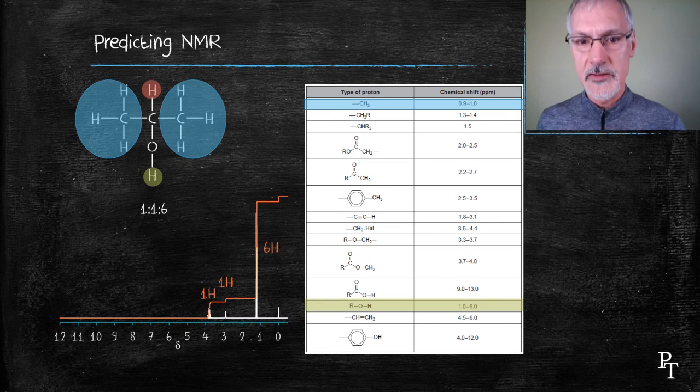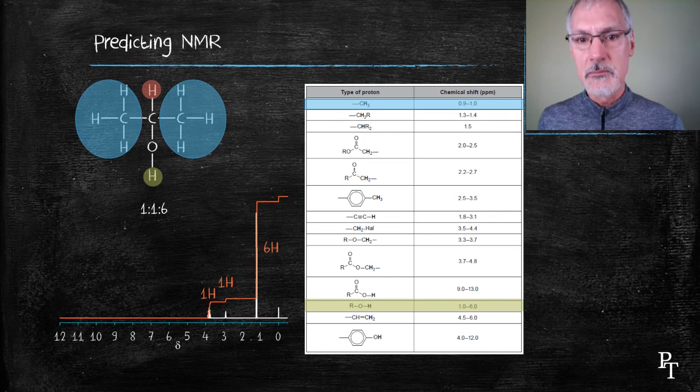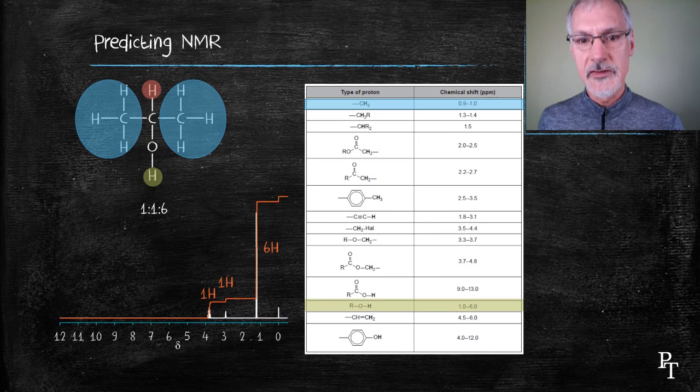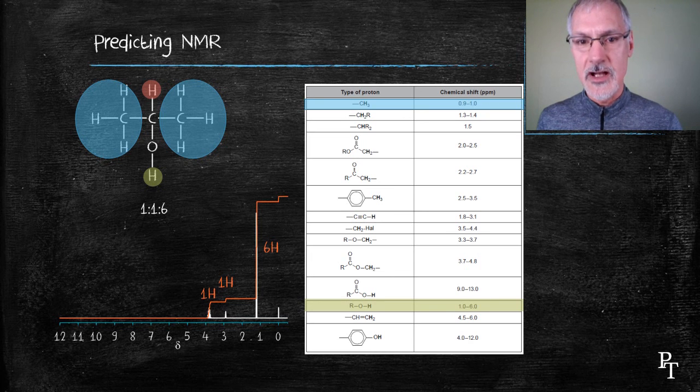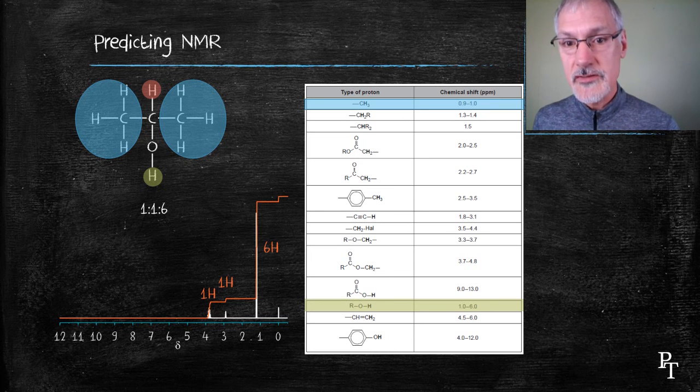NMR is the final one of our three techniques. The three of them, mass spectroscopy, infrared spectroscopy and NMR, you use these three together to analyze and determine the structure of compounds. Questions are always welcome, and please don't hesitate to pass on a comment.